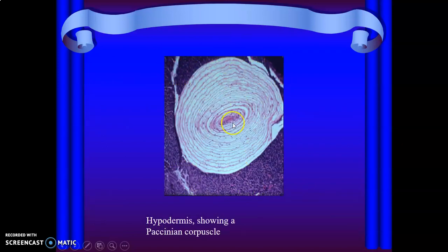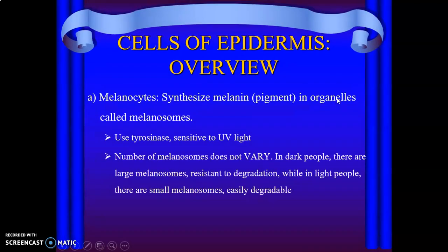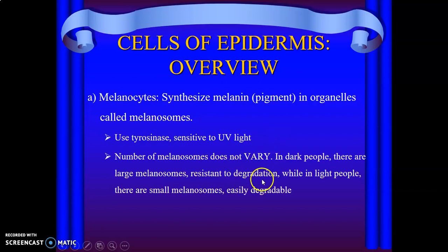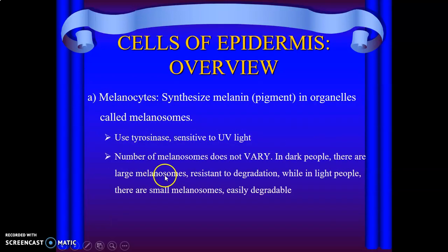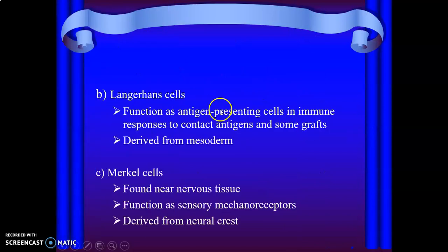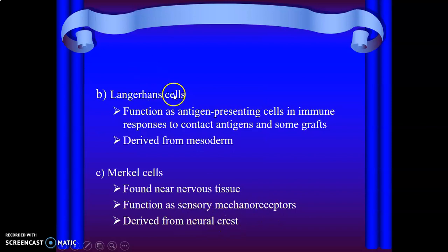When you see a picture in the exam with a nerve ending that is encapsulated with connective tissue around it, that is always a Pacinian corpuscle. Melanocytes in the epidermis synthesize melanin using tyrosinase, which is sensitive to UV. In dark-skinned people there are large melanocytes resistant to degradation, while light-skinned people have small melanocytes that are easily degradable. Langerhans cells are antigen-presenting cells for immune function and come from the mesoderm. Merkel cells are mechanoreceptors and come from neural crests.